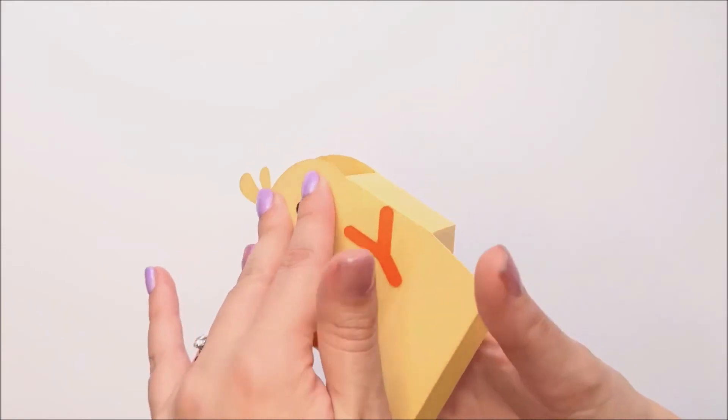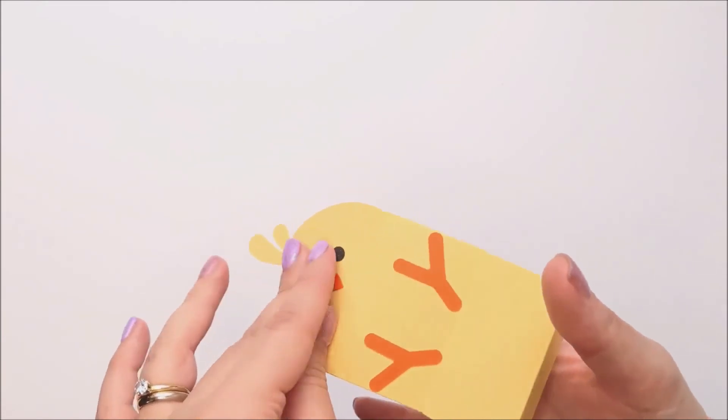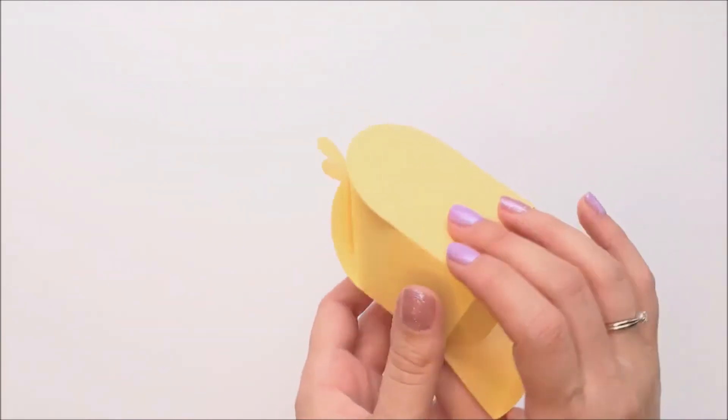Again, if your box is too small for you to get your hands in there, use a skewer or a pencil to apply pressure on the inside. And then we'll repeat it on the back side.